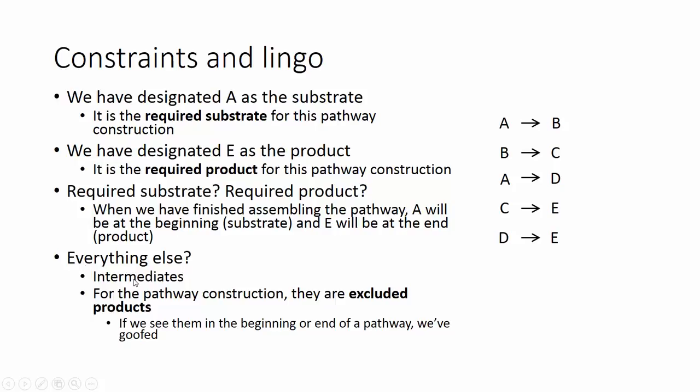Everything else are intermediates. And intermediates are substrates and products in their own right. But for the sake of this pathway construction exercise, they are what we would call excluded products. We are excluding them from the pathway. If we see them at the beginning or the end of the pathway we've created, we've done something wrong.